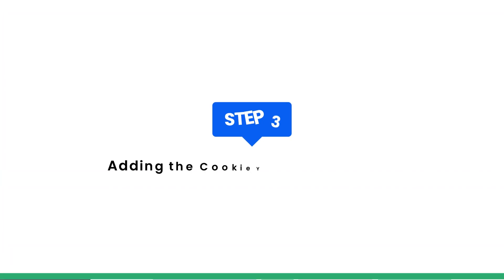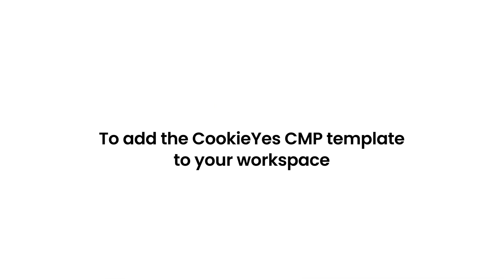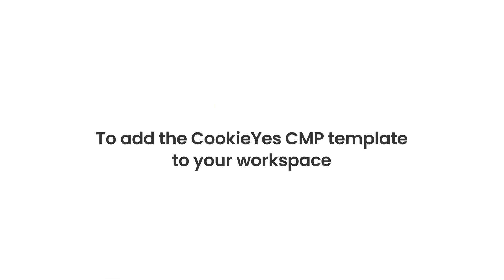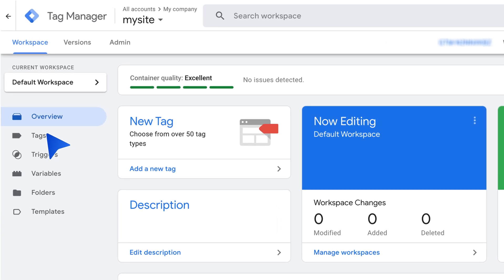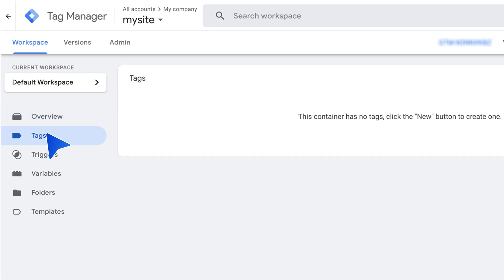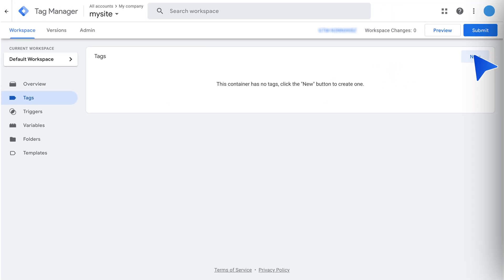Step 3: Adding the Cookie Yes CMP template. To add the Cookie Yes CMP template to your workspace, go to your workspace, click Tags, and to add a tag, click New.